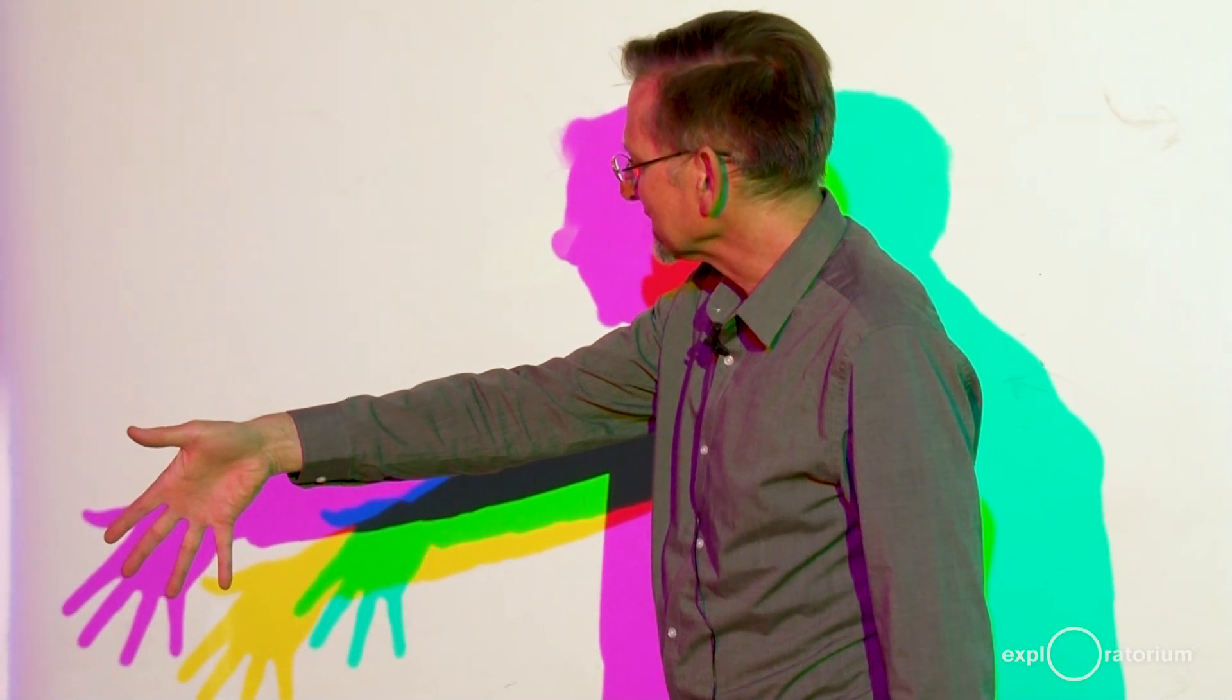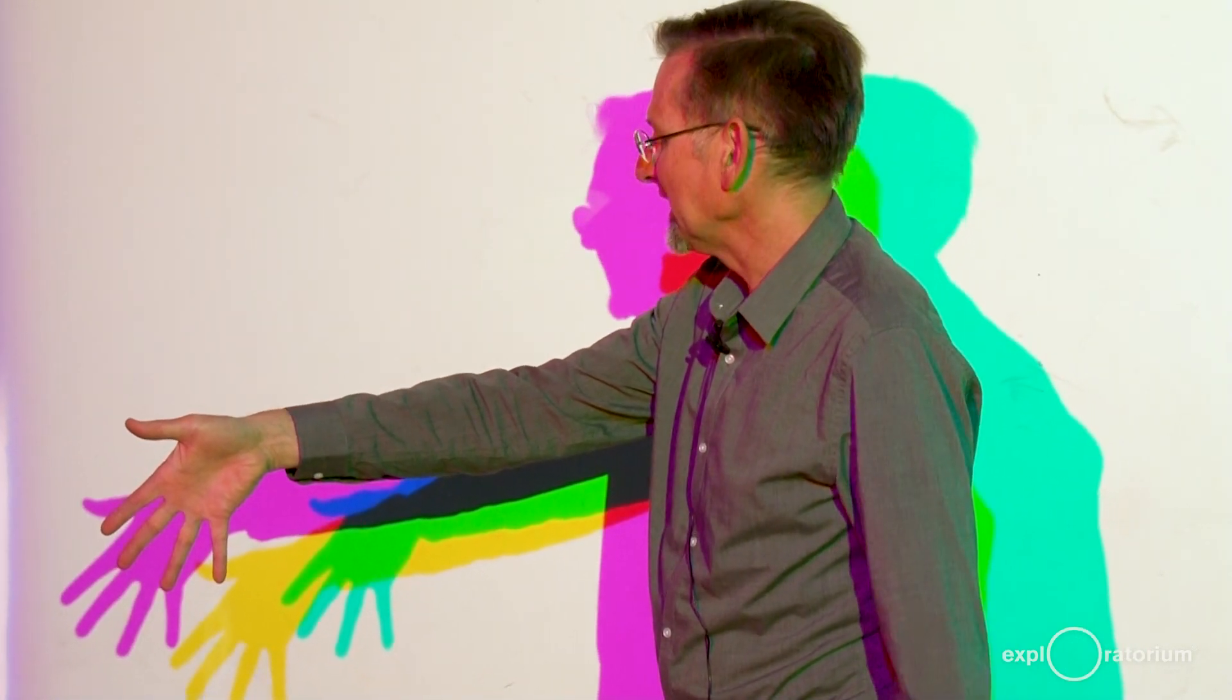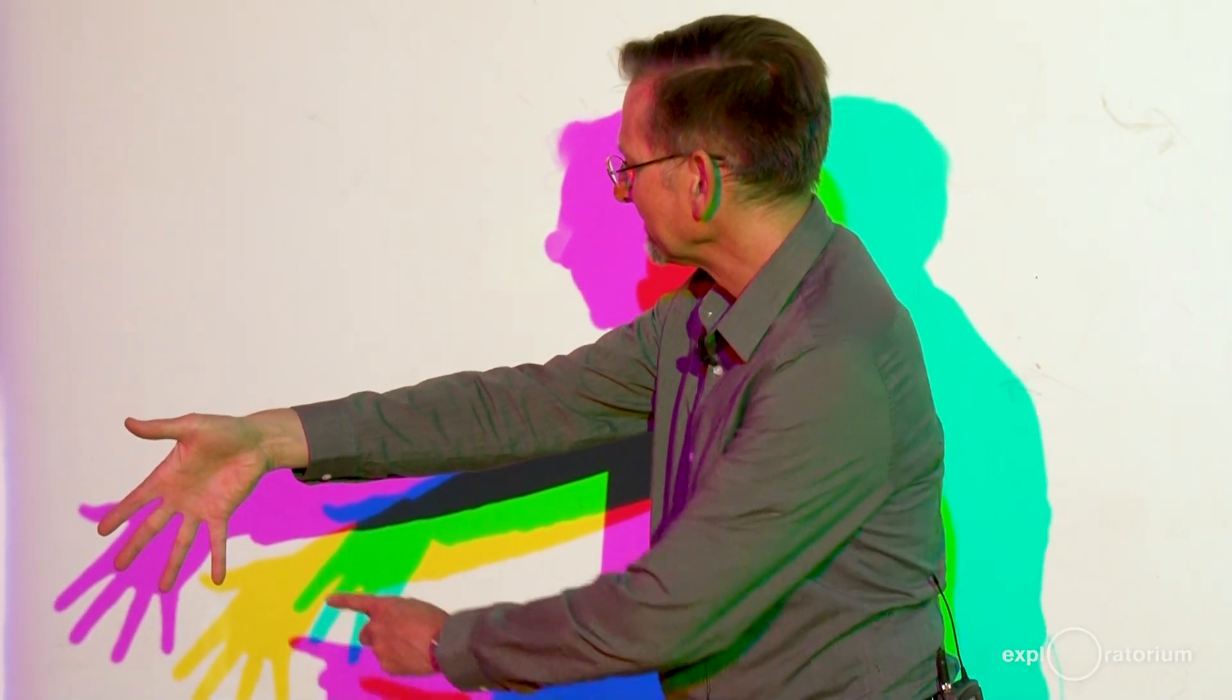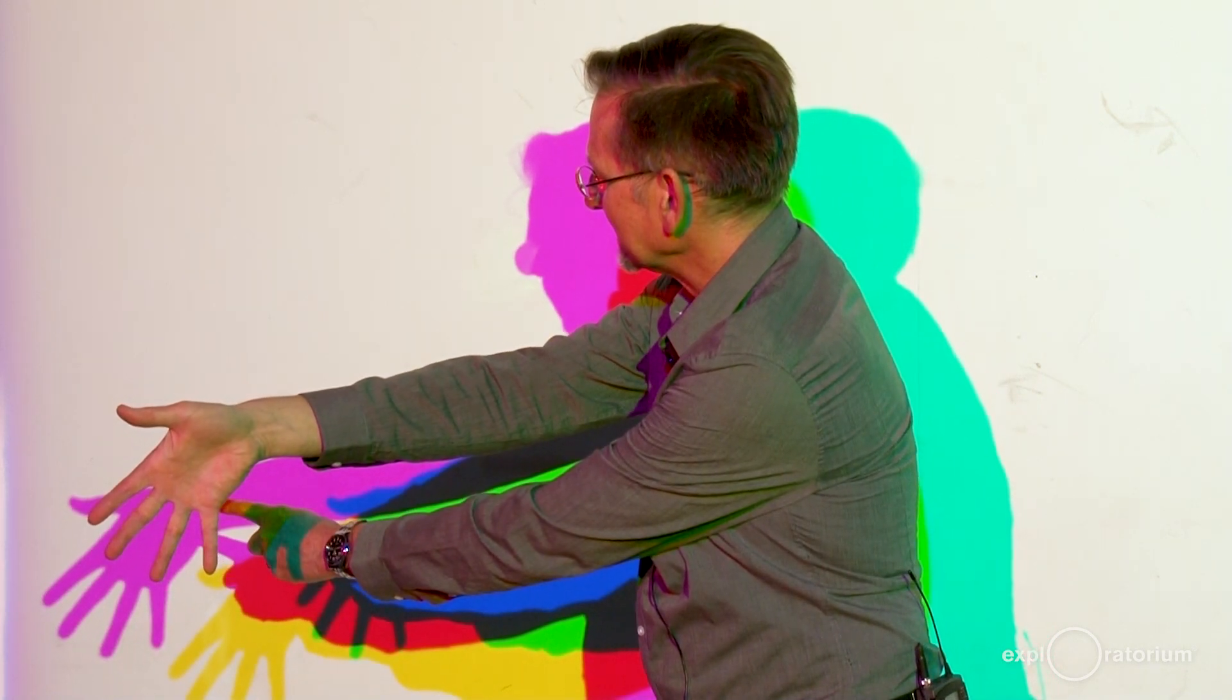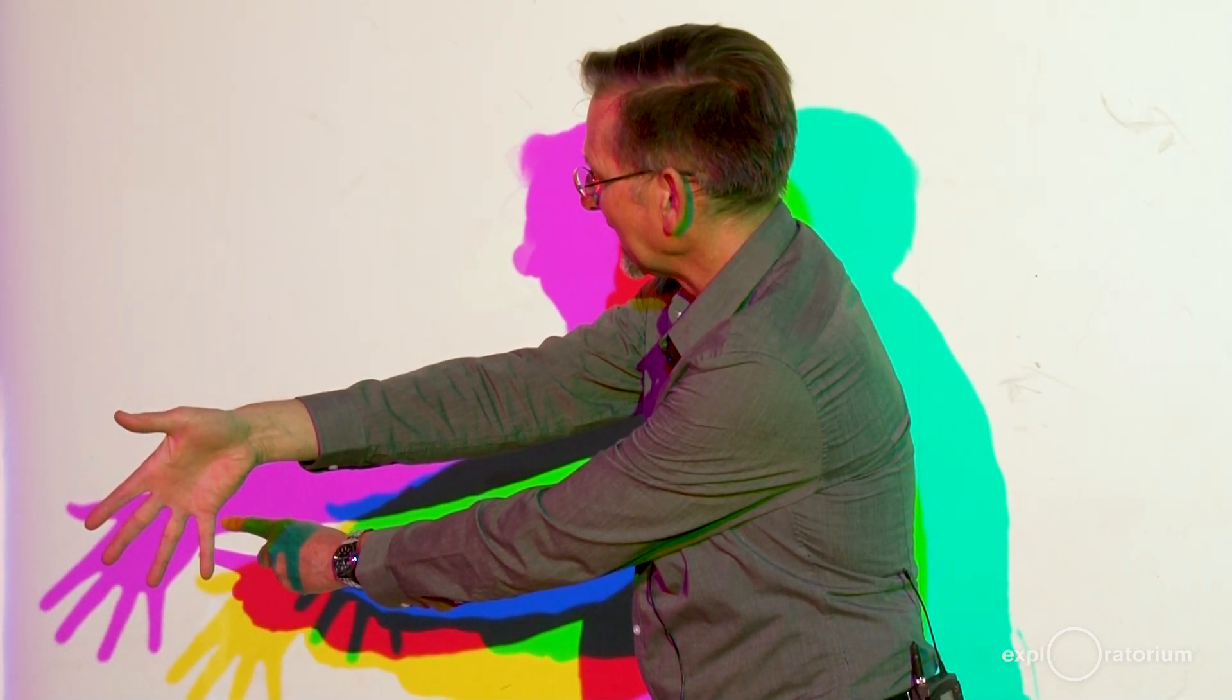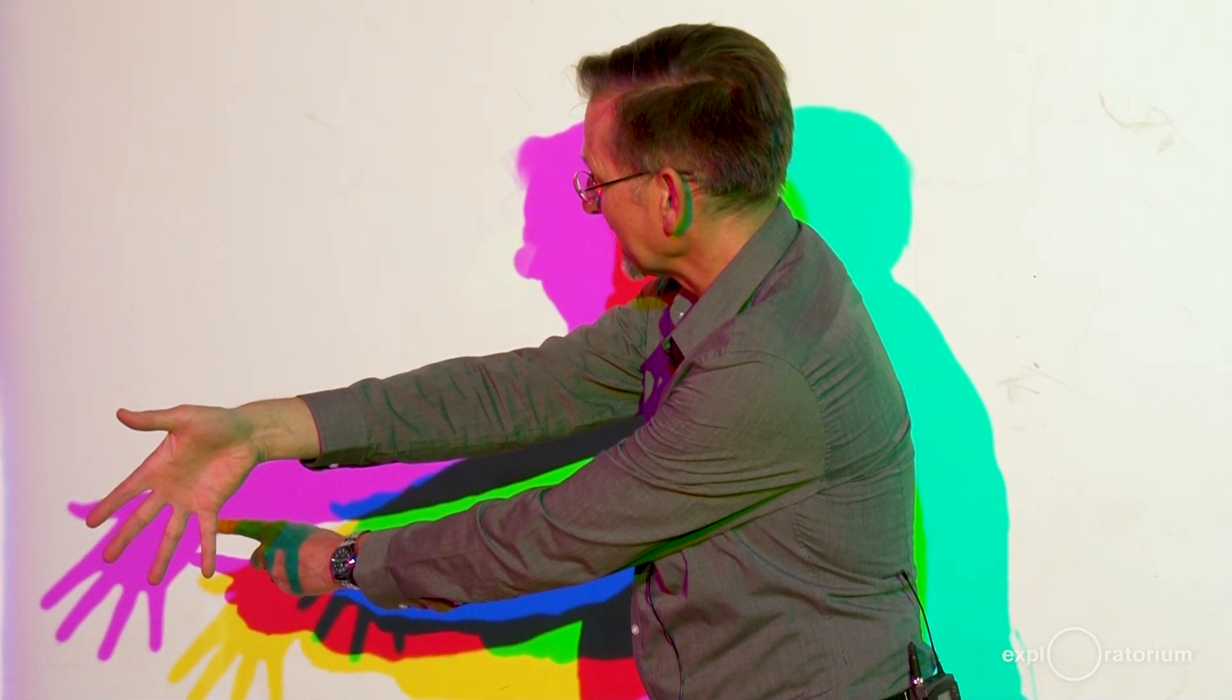But where I block one of the lights, the other two lights can combine, giving me a magenta shadow. That's the blue light and the red light combined. I'm blocking the green light to make this shadow.